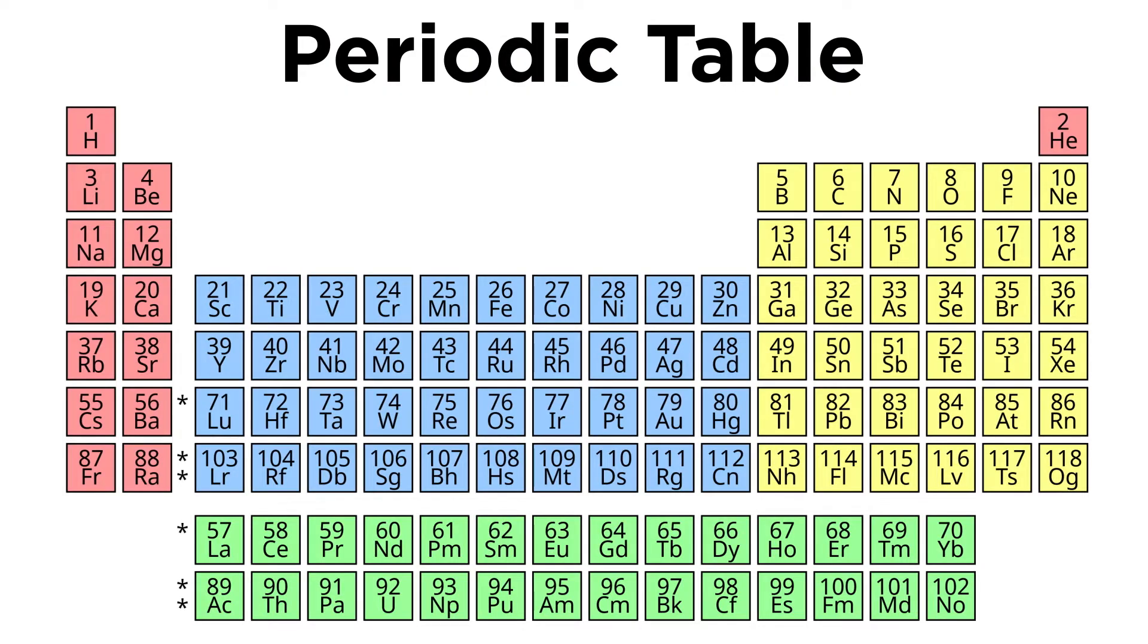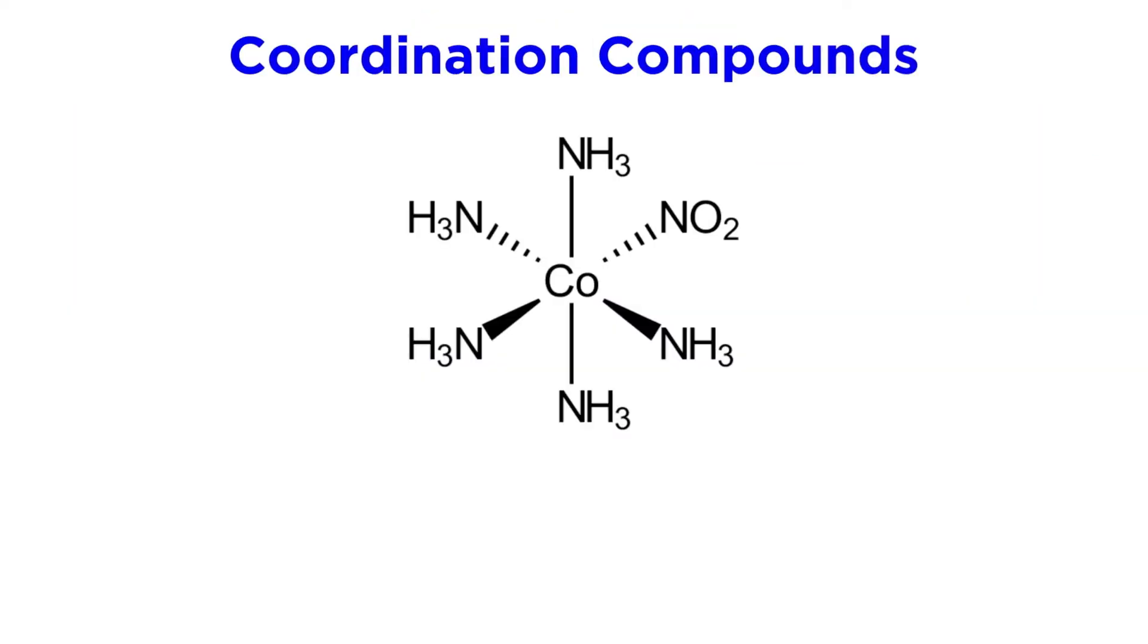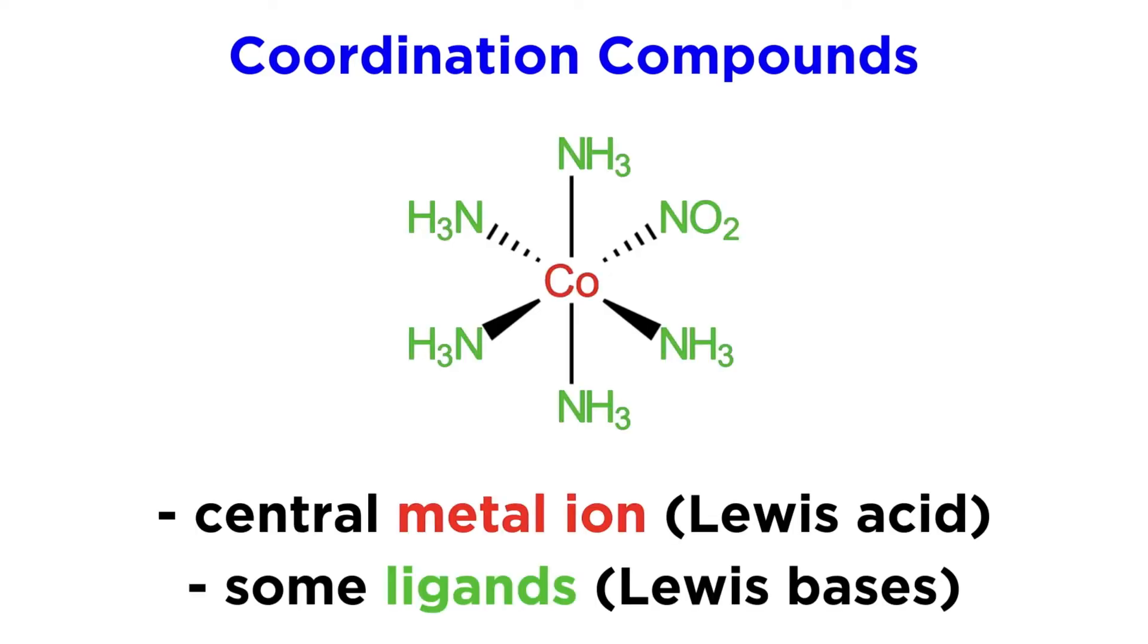With our survey of the periodic table complete, we are now going to settle into the D block and learn a lot more about transition metals. In the general chemistry series we got an introduction to coordination compounds, so some of what we will discuss here may be familiar.